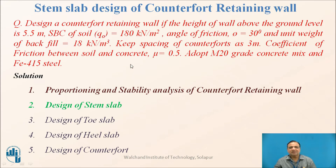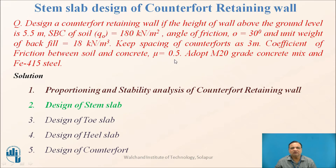This is a design example. Design a counterfort retaining wall if the height of the wall above the ground level is 5.5 meter. SBC of soil is 180 kN/m². Angle of internal friction φ is 30 degrees. Unit weight of backfill is 18 kN/m³. Keep the spacing of the counterfort as 3 meter. Coefficient of friction between soil and concrete μ is 0.5. Adopt M20 grade concrete and Fe415 steel.